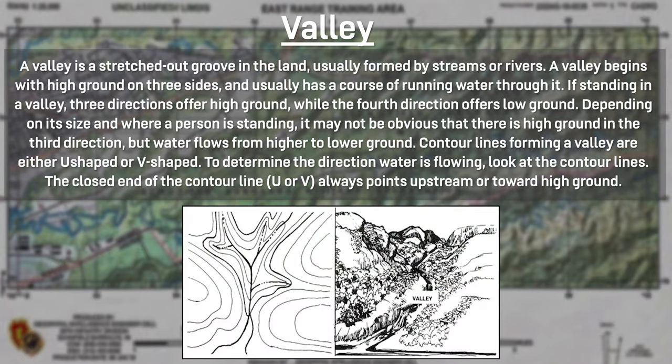A valley is a stretched-out groove in the land usually formed by streams or rivers. It begins with high ground on three sides and usually has a course of running water through it. If standing in a valley, three directions offer high ground while the fourth offers low ground. The water flows from higher to lower ground. Contour lines forming a valley are either U-shaped or V-shaped, and the closed end of the contour line always points upstream toward higher ground.